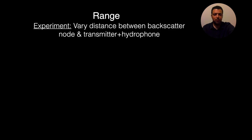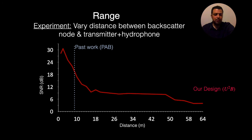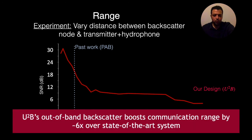Now, I will show you how we were able to extend the range. The experiment we performed was, we changed the distance between the backscatter node and the co-located transmitter and hydrophone. What I'm going to show you is, on x-axis, I'm showing the distance in meters and on y-axis, I'm having signal-to-noise ratio. I want to remind that, with our prior design, we were able to only achieve up to about 10 meters of communication. Now, with U2B, this is the SNR that we will get over distance. And now, you can see that with this new design and by performing out-of-band backscatter, we were able to significantly boost the communication range to about 64 meters. The conclusion here is, with U2B and out-of-band backscatter, we were able to boost communication range by about 6 times over the state-of-the-art system.